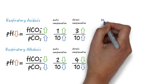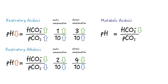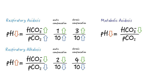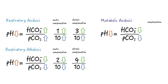In metabolic acidosis, as the bicarb goes down the pH goes down, and as a compensatory mechanism the pCO2 also goes down due to hyperventilation. Respiratory compensation takes place immediately, so here we don't discriminate between acute and chronic settings. For each one-unit decrease in bicarb, the pCO2 goes down by one unit.